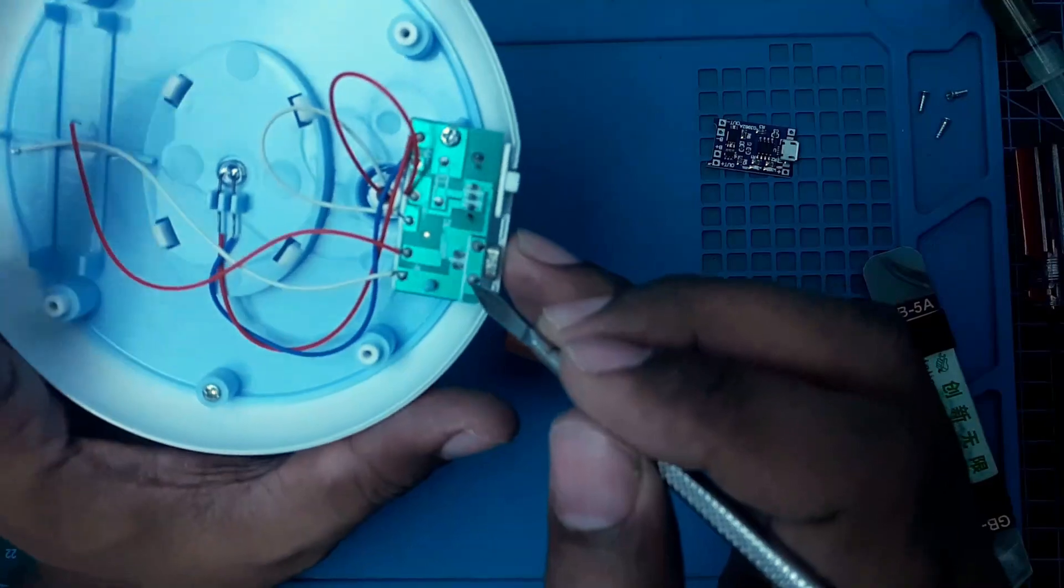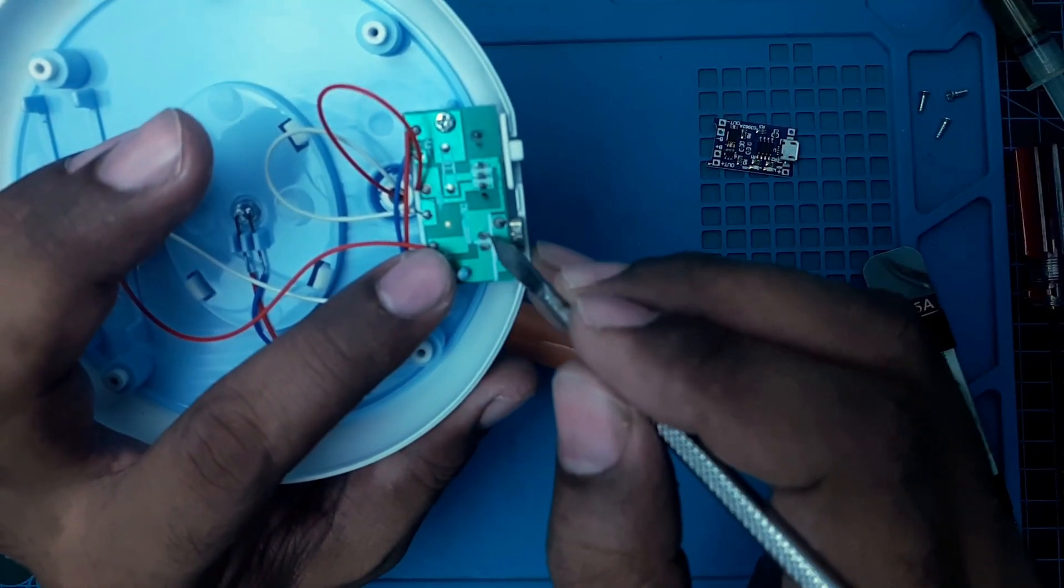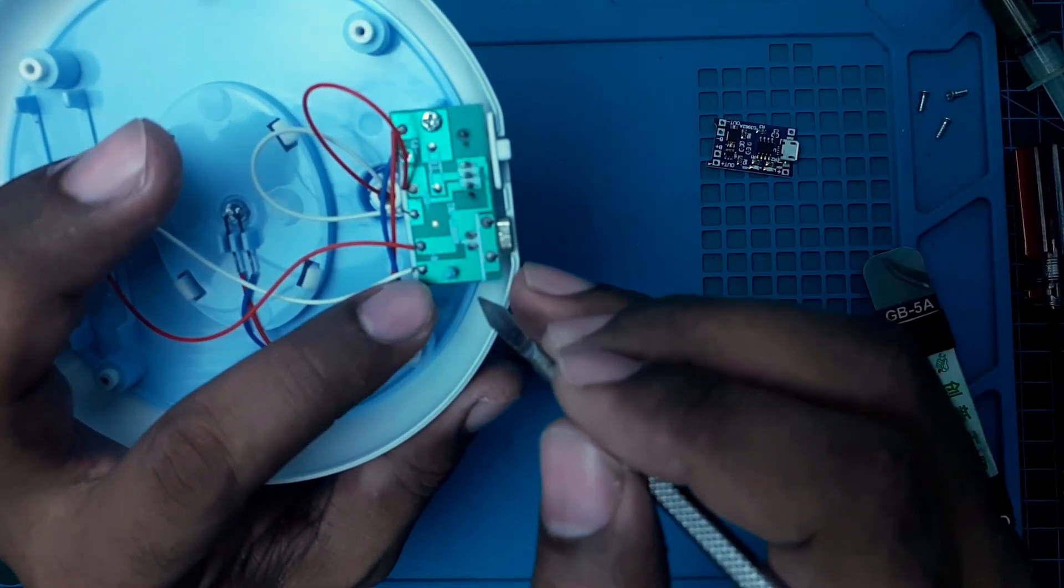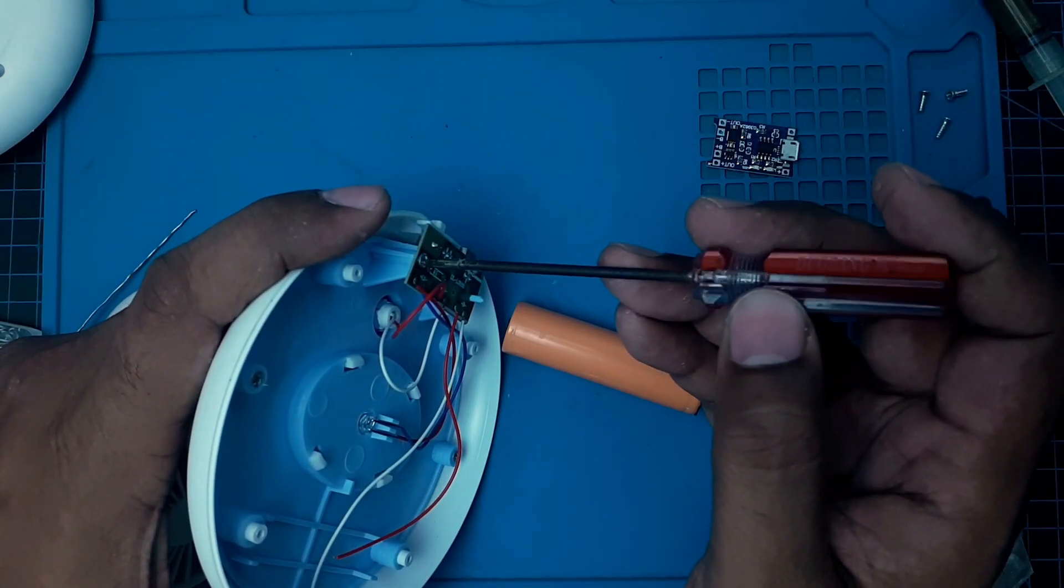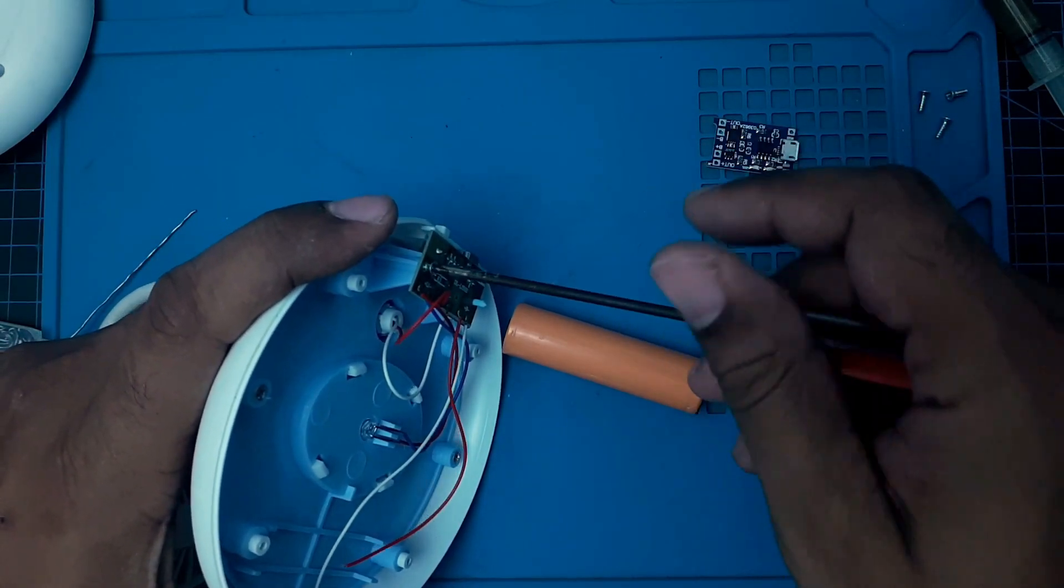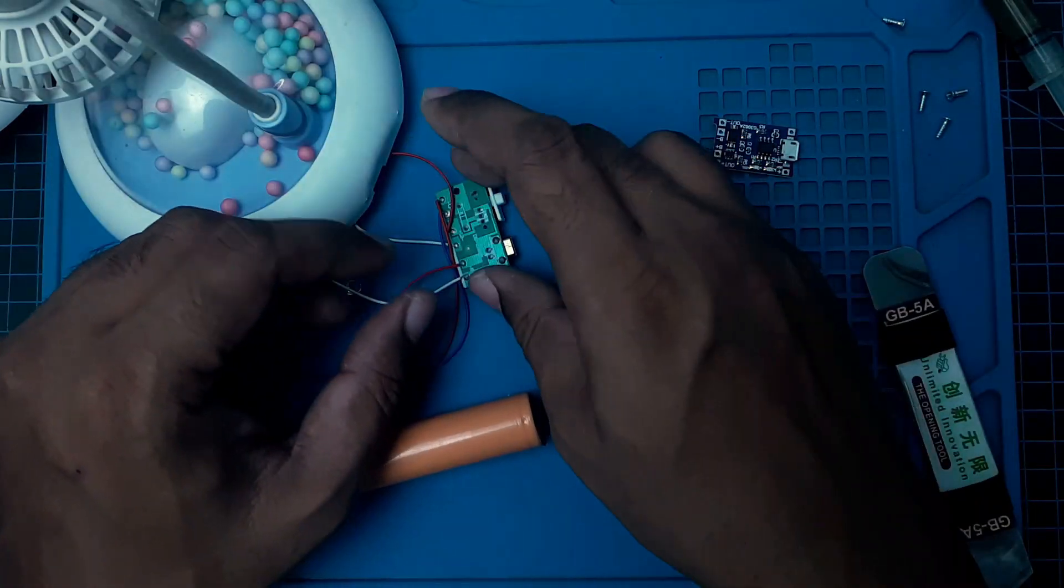So what I will do now, I will disconnect the voltage input from the circuit. And I have to open this circuit. That will be easier for me to work.